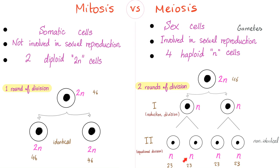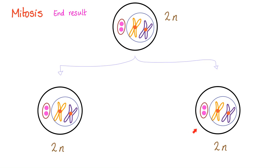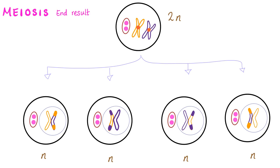Meiosis has two rounds of division — we call this meiosis one and meiosis two. Notice that the end result of mitosis are identical cells — identical with each other and identical with the parent cell. However in meiosis these are non-identical cells. Thanks to crossing over, this is genetic diversity. The end result of mitosis is two identical cells, each with 2N (diploid). Meiosis on the other hand produces haploid, non-identical cells that do not look like each other or the parent.